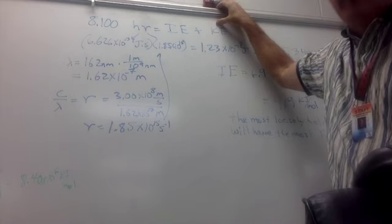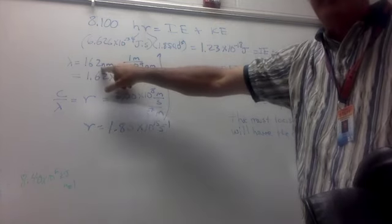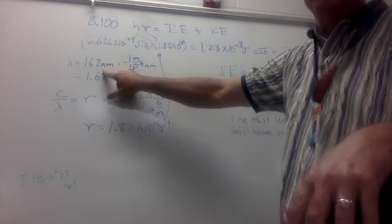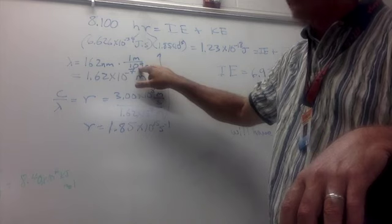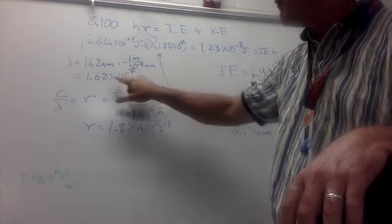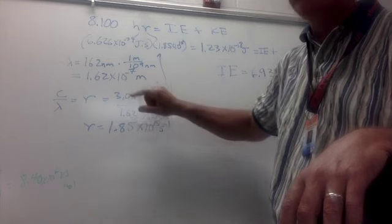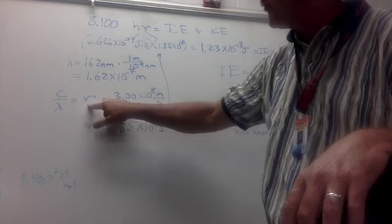Now in this particular problem, they said that they were using 162 nanometer wavelength of ultraviolet light. So the first thing I did was I converted 162 nanometers by dividing by 10 to the ninth. I converted to meters, 1.62 times 10 to the minus 7.